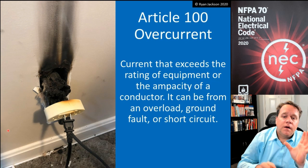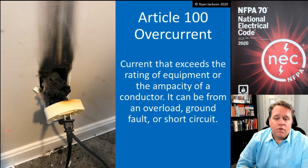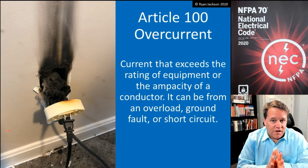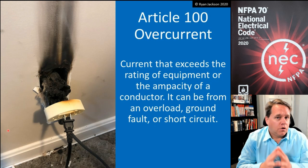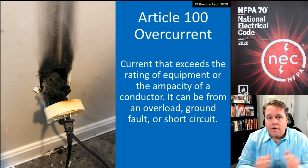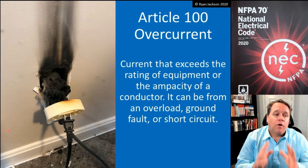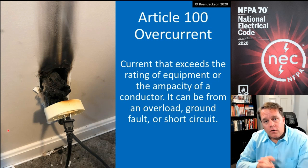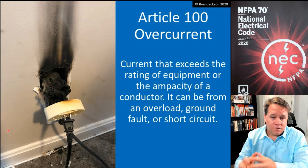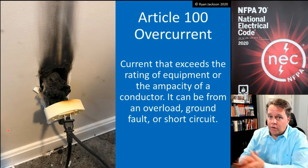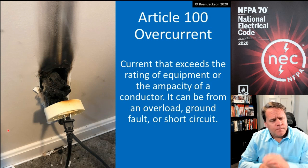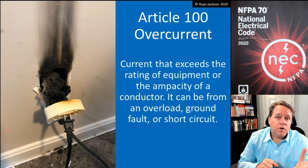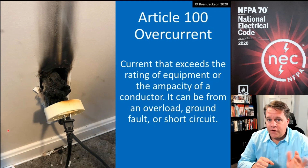Overcurrent can result from an overload, a ground fault, or a short circuit. It's really important to understand that you have to protect against all three — otherwise you don't have overcurrent protection. If all you have is overload protection, that's not overcurrent protection; it's overload protection. If all you have is ground fault and short circuit protection, that's ground fault and short circuit protection. Usually we protect against all three with one device, called a branch circuit overcurrent device.